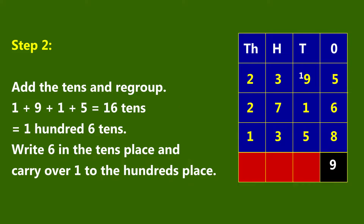Step 2: Add the tens and regroup. One plus nine plus one plus five is equal to sixteen tens — one hundred, six tens. Write six in the tens place and carry over one to the hundreds place.